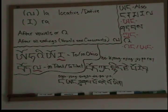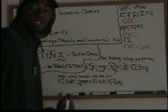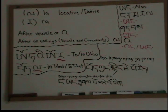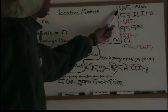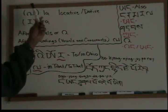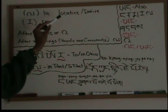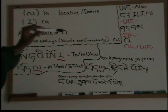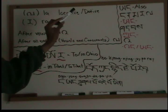Hello everyone. Today here is our new Tibetan lesson. Today we have two things we are going to talk about: the connective 'also' (yang), and the oblique la and ra, which are known as locative and dative.